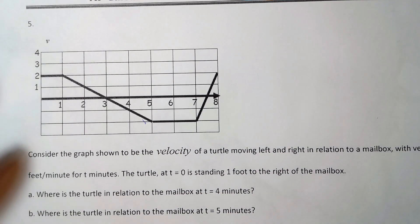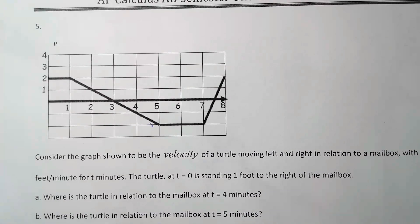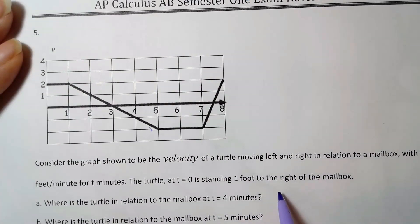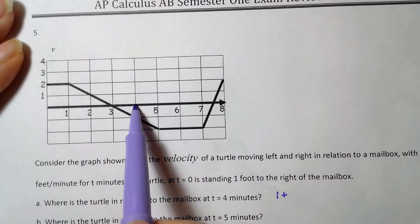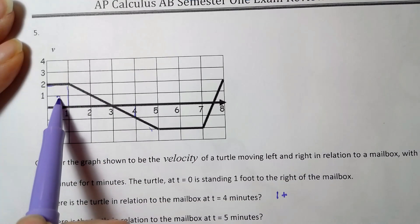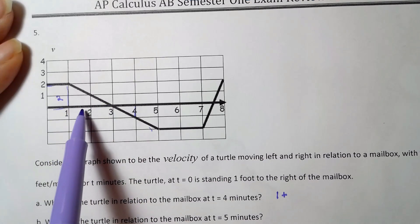So you're going to keep that in mind. This is part (a): where is the turtle in relation to the mailbox at t equals four minutes? Well easy, I already know he's one foot to the right, and now all I have to do is add up these areas. So here's an area of one times two, or two. This triangle is one half base, so one half of two is one, times the height is two.